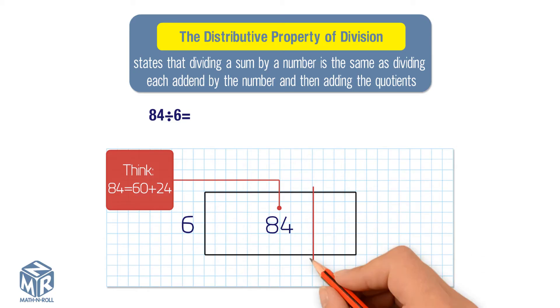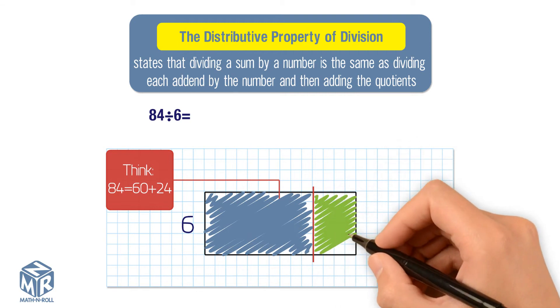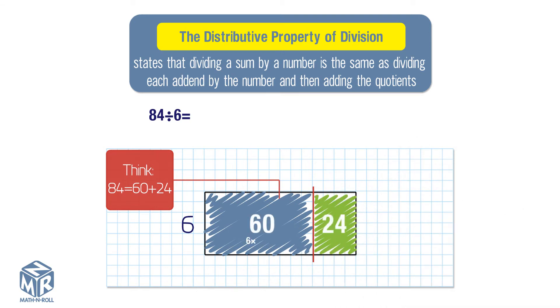Break apart the model into two rectangles to show the sum of 60 plus 24 divided by 6. Label and shape the smaller rectangles. You can use two different colors. Each rectangle models a division.